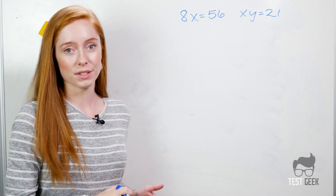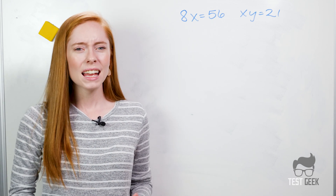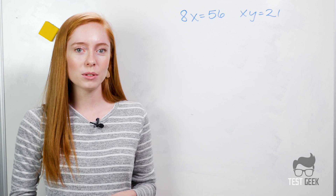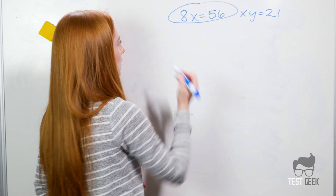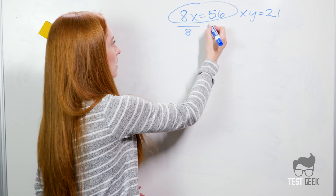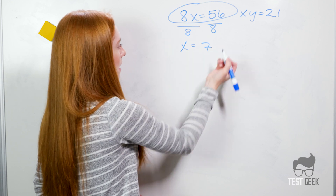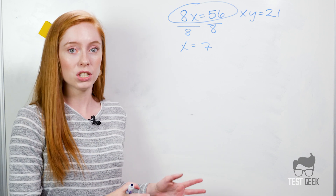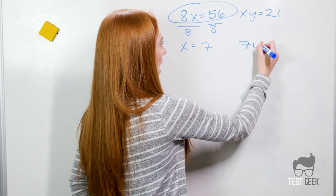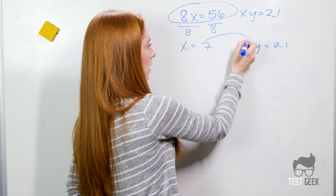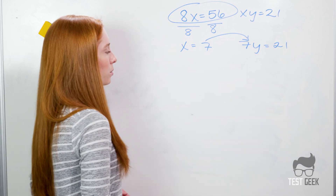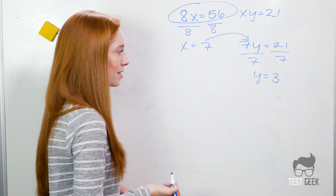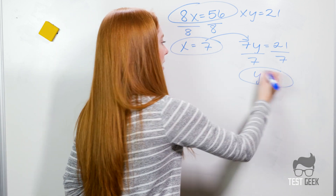Let's look at another example. We have two variables here, x and y, and we also have two equations. It's going to be easier if we start with the equation that only has one variable. So we'll solve for x using 8x equals 56 — divide both sides by 8 and we get x equals 7. Now we can plug our x into our other equation and solve for y. We get 7y equals 21, divide by 7, and we get y equals 3. So we've solved for both x and y.